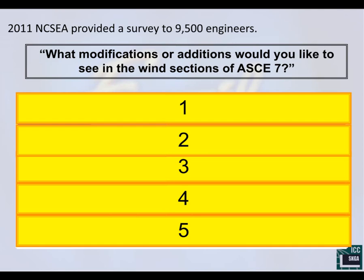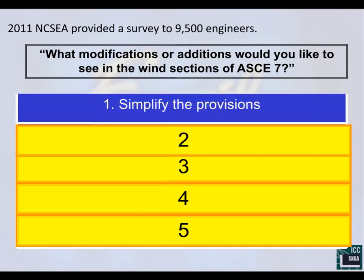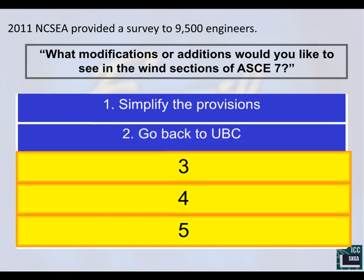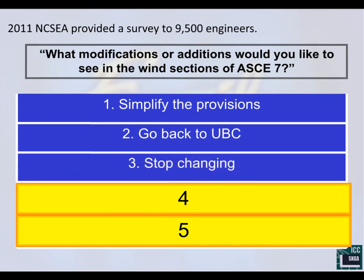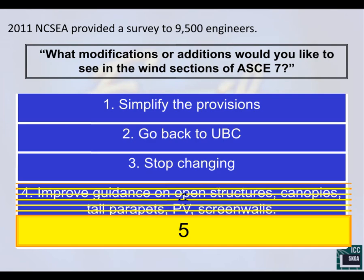A little unsurprisingly, the top answer was to simplify the provisions. We won't spend a lot of time on that today, but where the code remains complicated I'll try to explain the reasoning and simplify what we need to do as practicing engineers. The second answer was to go back to UBC — that's not happening, but the essence is still valid: we need to keep our wind provisions simple. The third was to stop changing, which I'm sympathetic to, though it's impossible to simplify without changing.